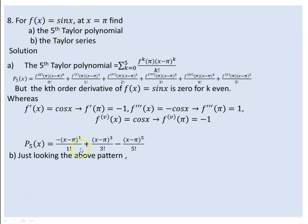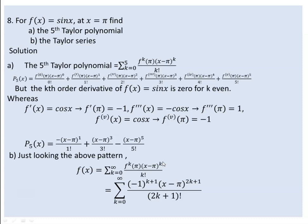From the pattern of terms, each term is of a specific form. The series runs to infinity. We can identify the general term of the series based on the pattern of alternating signs.